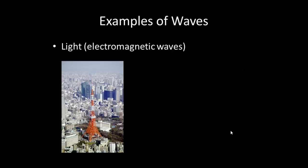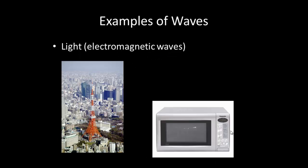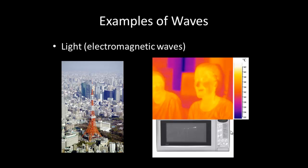We can extend beyond our visible light region into other electromagnetic waves like radio waves, microwaves, infrared, and also x-rays. So lots and lots of different examples of electromagnetic waves.